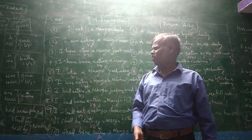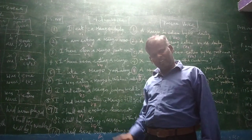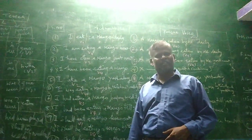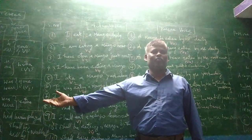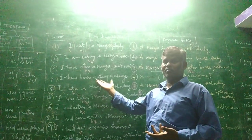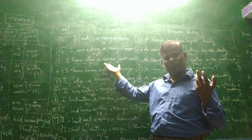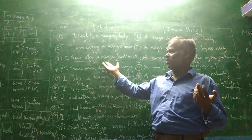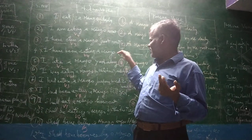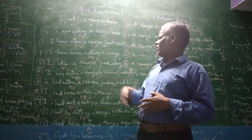Just now I have eaten a mango. Present perfect tense is very helpful — people used to say 'just now I have given that amount to my son' or 'just now I have given that amount to my friend — sorry, I don't have.' 'I have been eating a mango since my childhood days' — present perfect continuous. 'Since morning,' 'since last week' — we have to say regarding this.